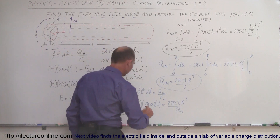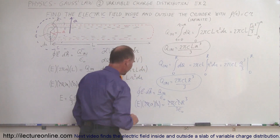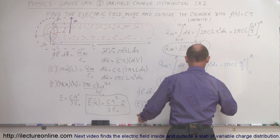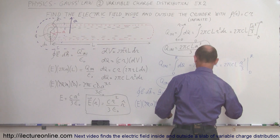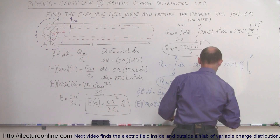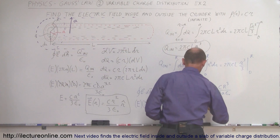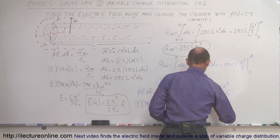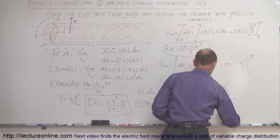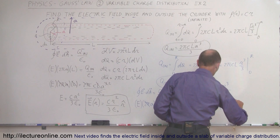Let's simplify: the 2π's cancel, the L cancels, but A does not — it moves to the denominator. So the electric field strength equals C R cubed divided by 3A epsilon sub nought. In vector form, E as a function of r equals C R cubed divided by 3r epsilon sub nought, in the radially outward direction. Notice the field diminishes as 1 over the distance away from the cylinder.